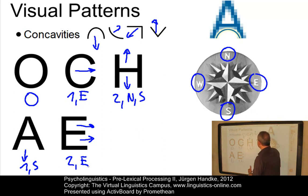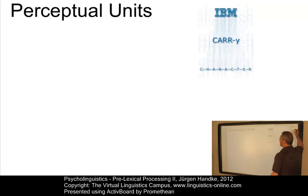And looking at the capital A, we have one concavity facing to the south. And E has two concavities, both facing to the east. Now, using these visual patterns, the central question emerges, how do we perceive the written signal? In other words, we are looking for perceptual units.